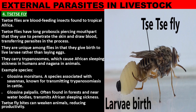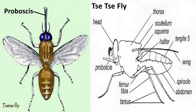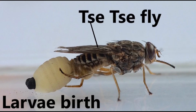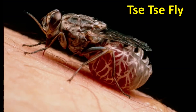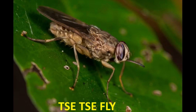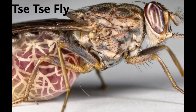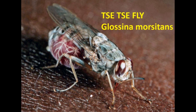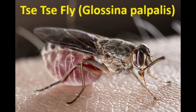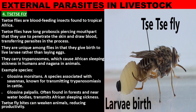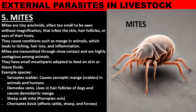Tsetse flies are blood-feeding insects found in tropical Africa. They have a long proboscis, a piercing mouthpart, that they use to penetrate the skin and draw blood, transferring parasites in the process. They are unique among flies in that they give birth to live larvae rather than laying eggs. They carry trypanosomes, which cause African sleeping sickness in humans and nagana in animals. Example species include Glossina morsitans, associated with savannas and known for transmitting trypanosomiasis in cattle, and Glossina palpalis, often found in forests and near water bodies, which transmits African sleeping sickness. Tsetse fly bites can weaken animals, reducing productivity in cattle.